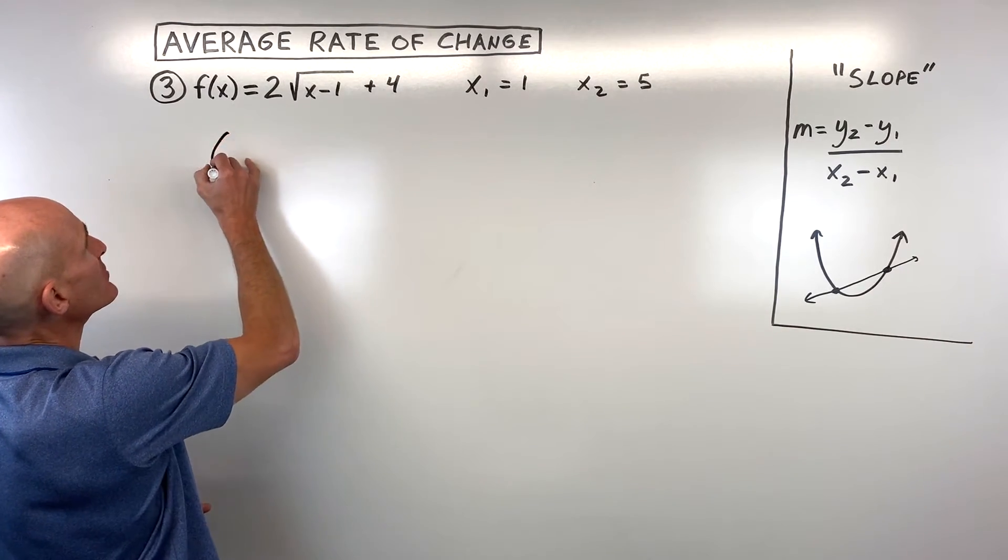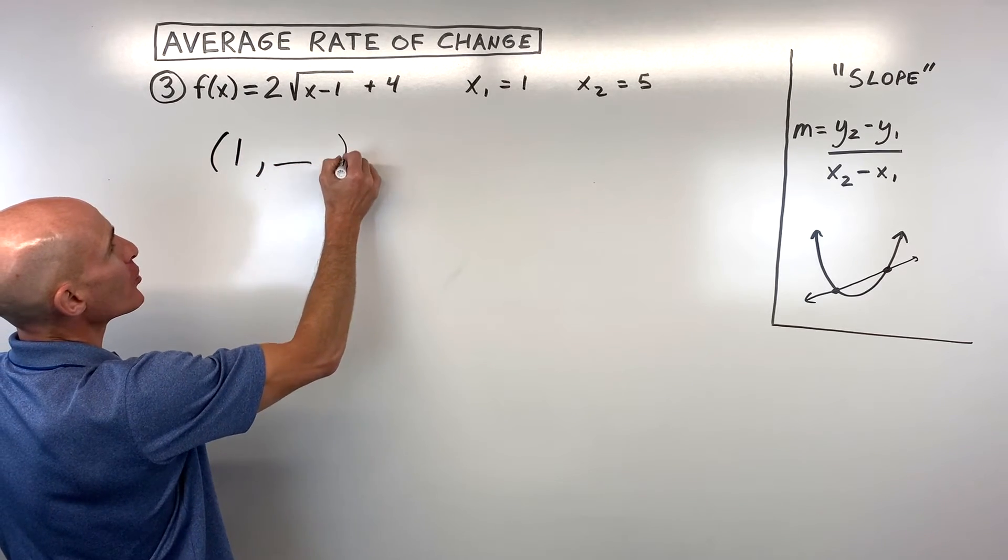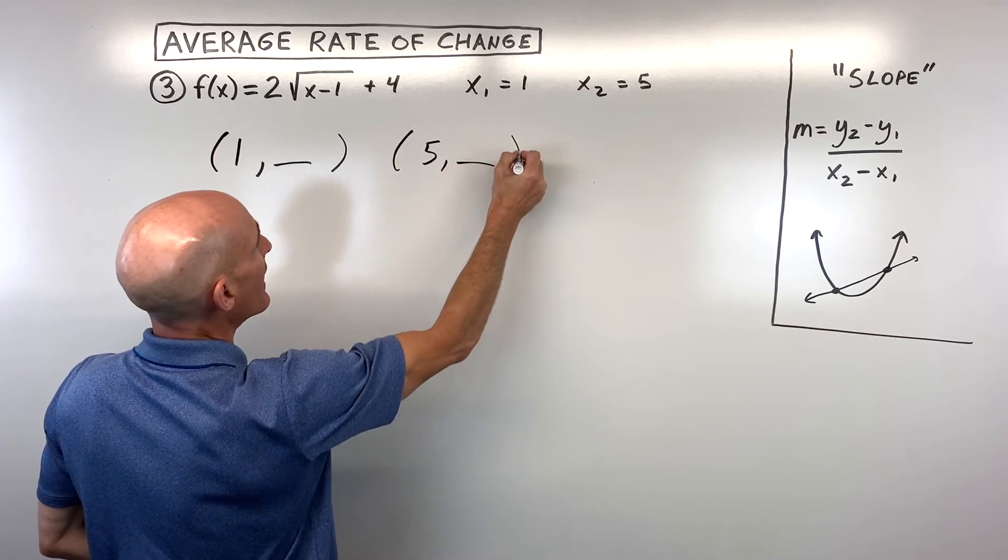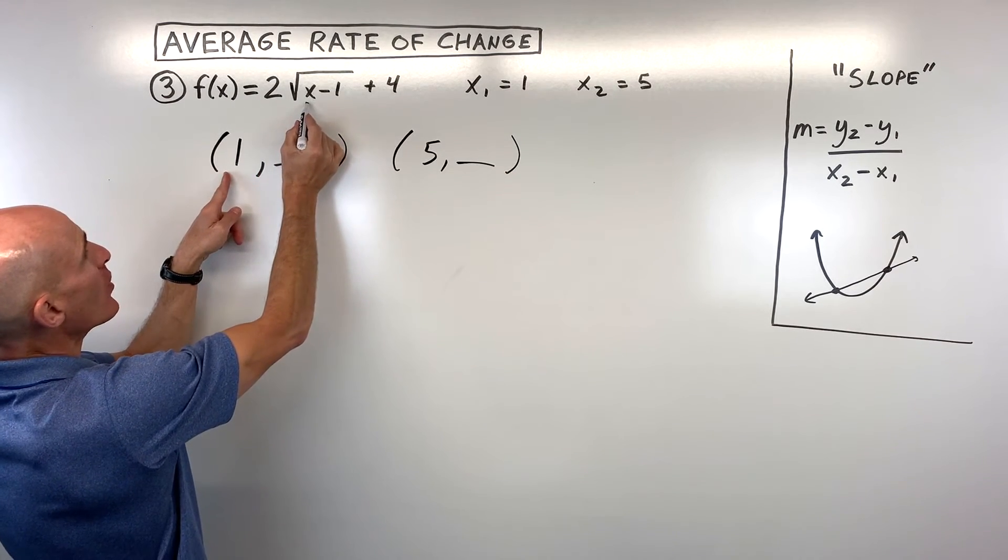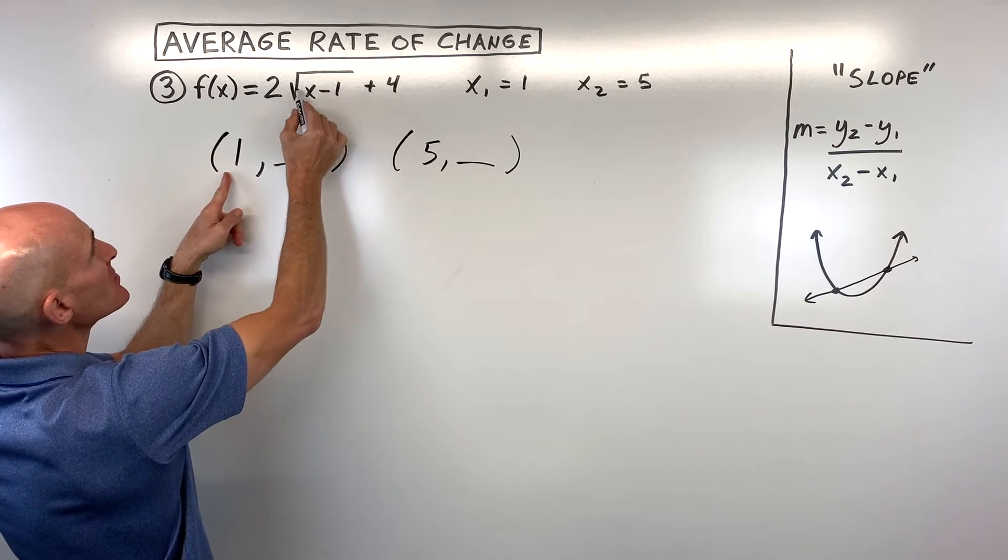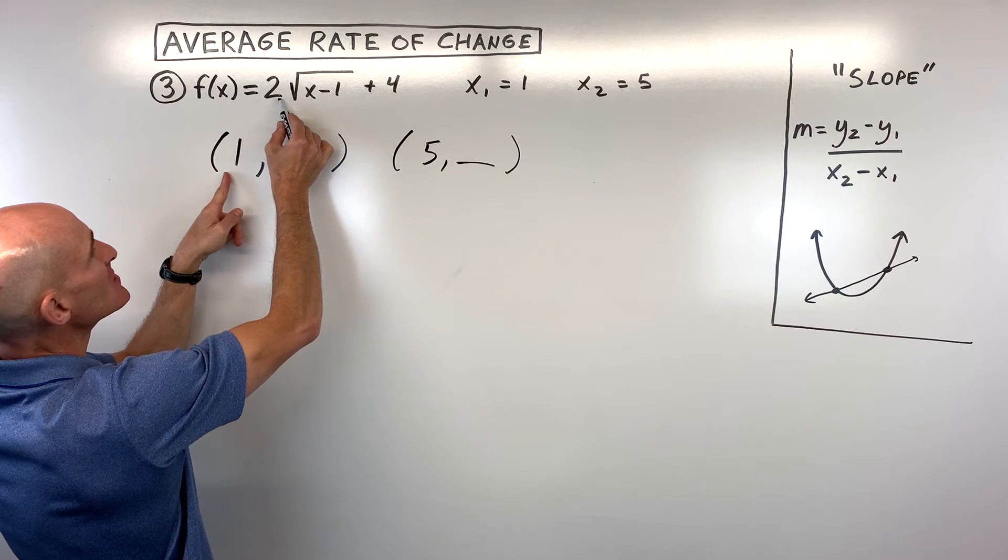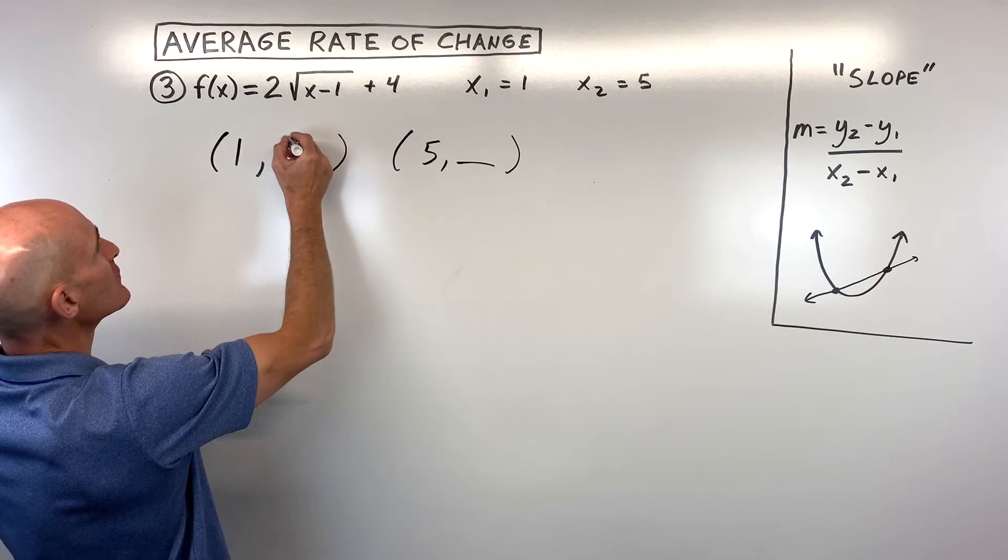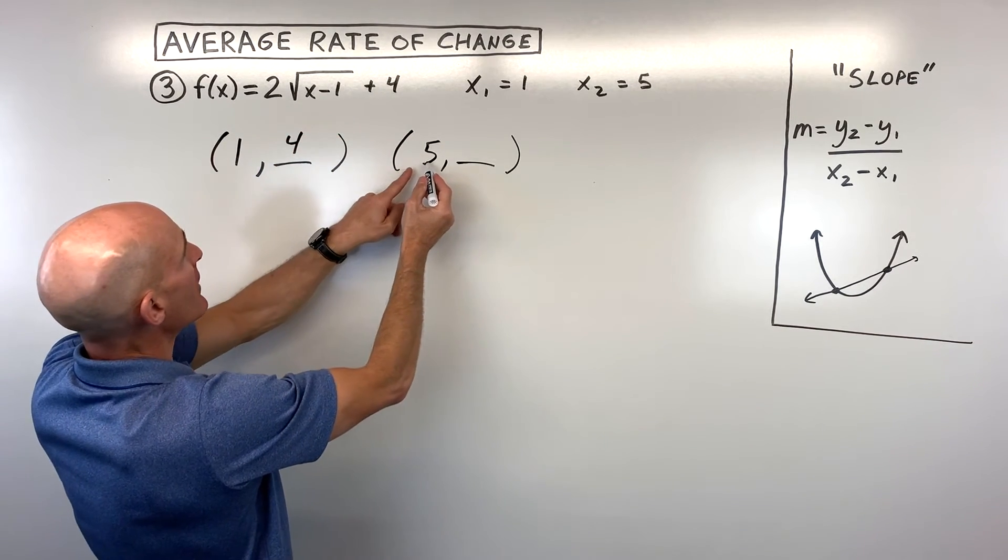So how would you do that one? Well, if I was going to do this, I would set it up as two coordinates, so 1 and 5. If I put 1 in, let's see, 1 minus 1 is 0, the square root of 0 is 0, times 2 is 0, plus 4 is 4, so that's our first point.